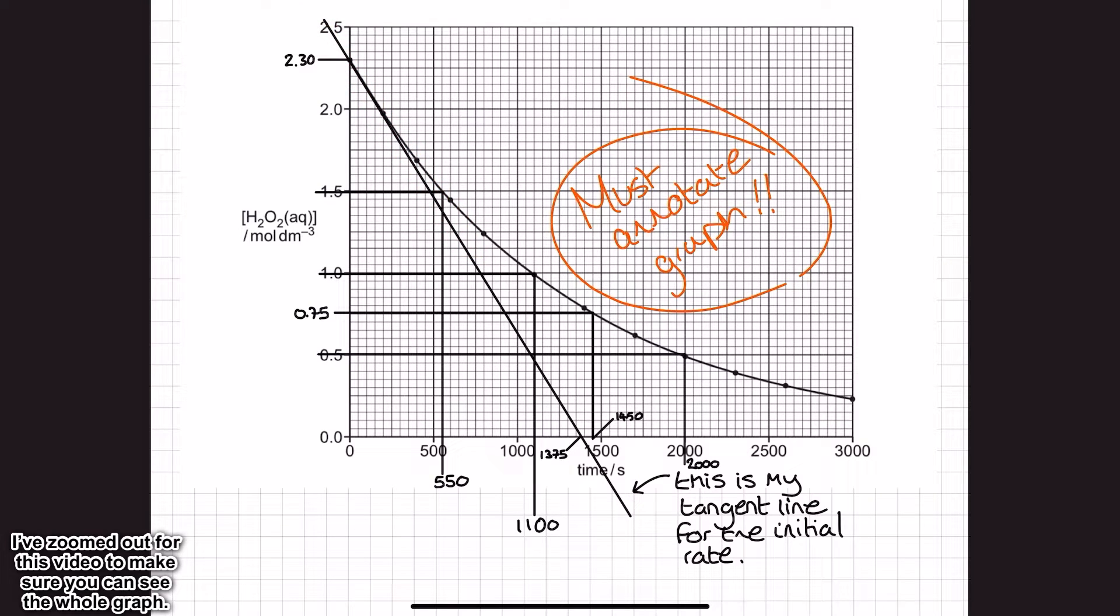Now, what I've done here is I've extrapolated that line, that tangent line, right the way down to the axis down here, the x-axis. And of course, because it's a t equals zero tangent, it does cut through the y-axis up here as well. As a result of that, the triangle that I'm going to use to calculate my gradient is going to be this whopper just here. And the OCR exam hints for students does tell you to use as big a triangle for these gradients as possible.